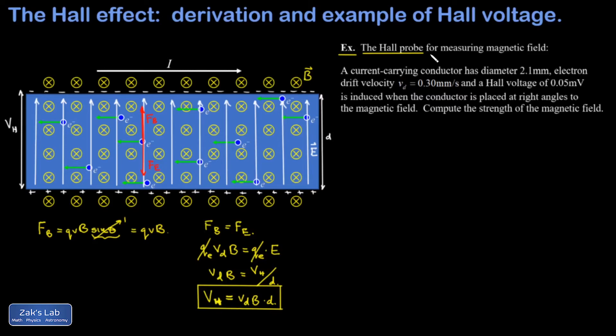To get a sense for how this works, I'm given that a current-carrying conductor has a diameter of 2.1 millimeters. The electron drift velocity is 0.30 millimeters per second. Remember, the drift velocity for a conductor depends on the geometry, how much current is going through it, and the material that it's made of.